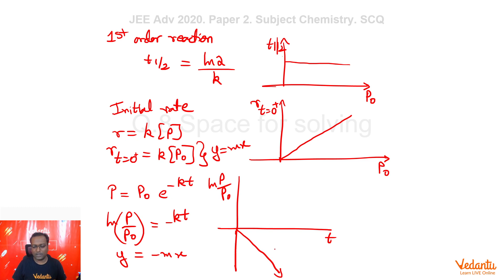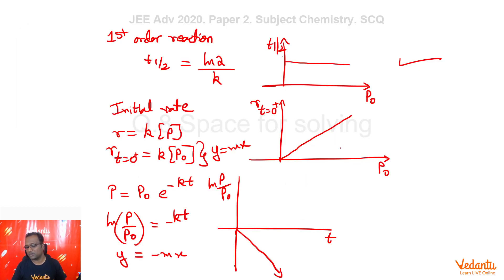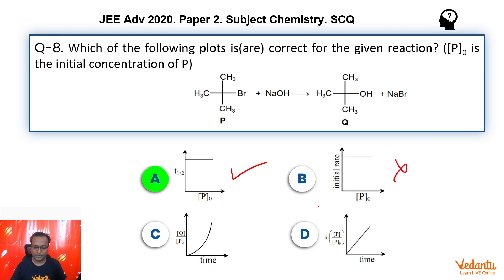Okay. So, now let's go to our options. T half versus P naught should be a straight line, horizontal straight line. Yes, correct, it matches. Initial rate versus P naught, horizontal straight line. No, initial rate versus P naught, y equal to Mx type. So, this one does not match. Ln P by P naught versus time, we just saw this should be in the fourth quadrant, right. This should be like this. So, this one also does not match.